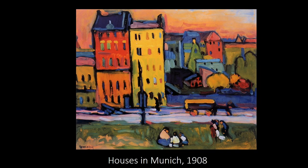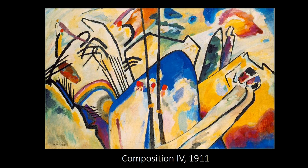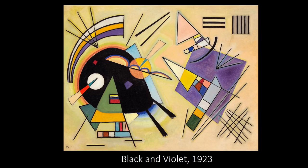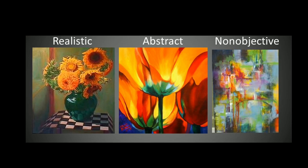Kandinsky is believed to be one of the founders of the abstract art movement, and we call his art abstract expressionism. Some of his paintings were even non-objective. This is a type of abstract art that goes a step further — in non-objective artwork there is no recognizable subject matter, meaning there is nothing we can easily identify like people, places, things, or objects.